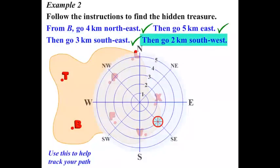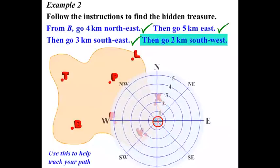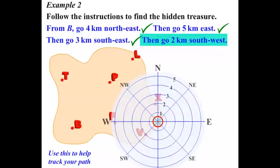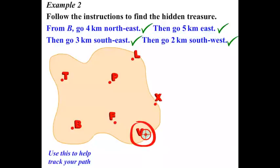Our last step is to go 2km South West. So we need to reposition our compass. And go 2km South West. Let's move that to that position. So what have we got? We've ticked that off. And we can see that the hidden treasure is buried at V.